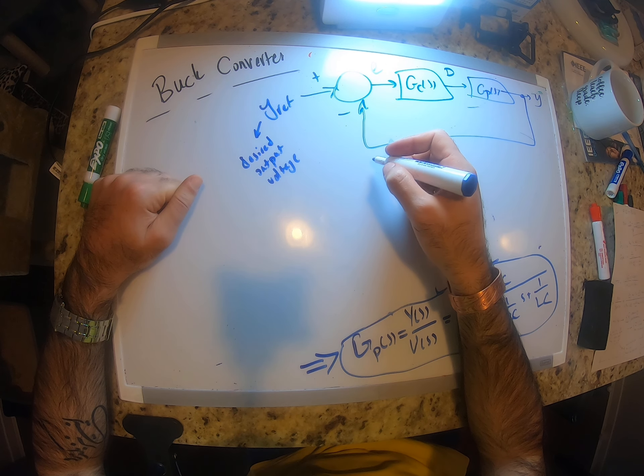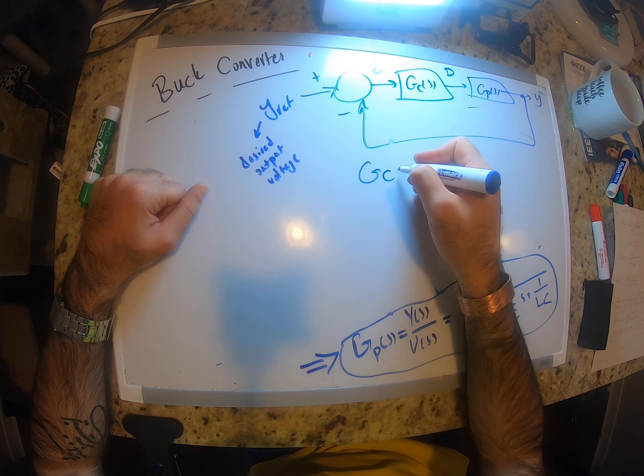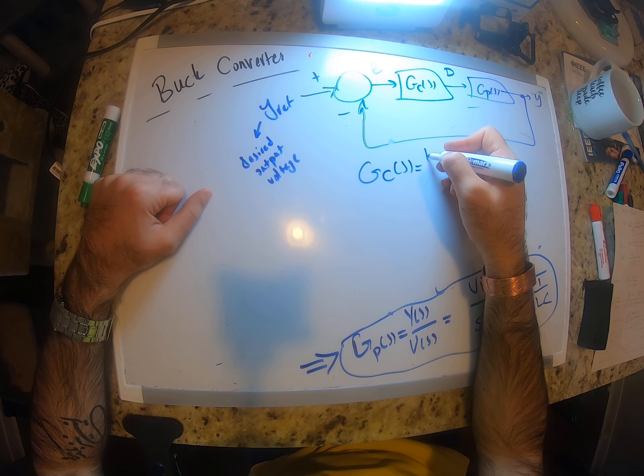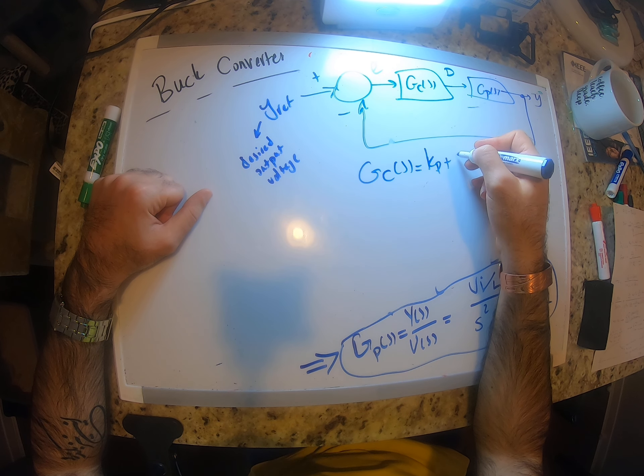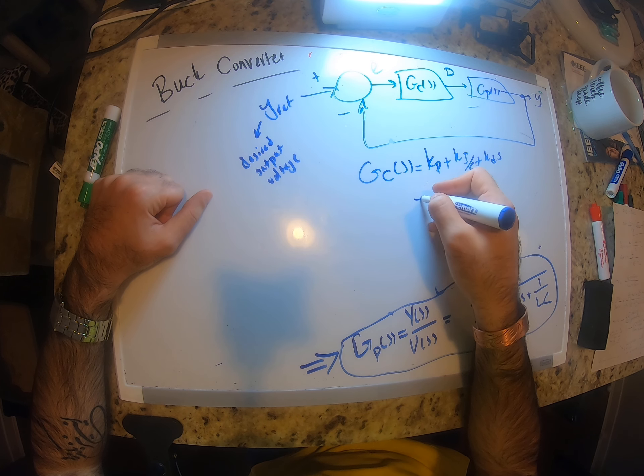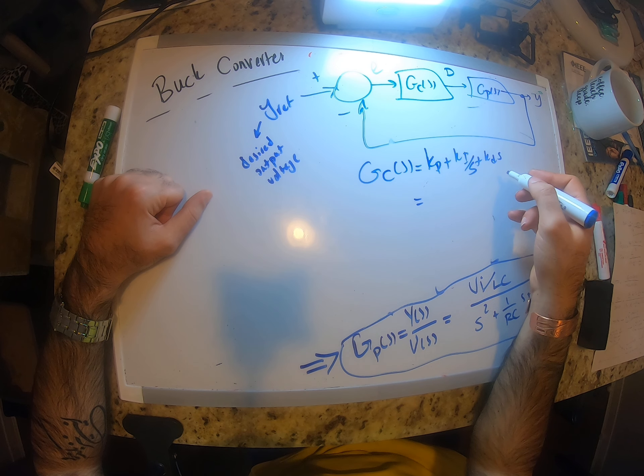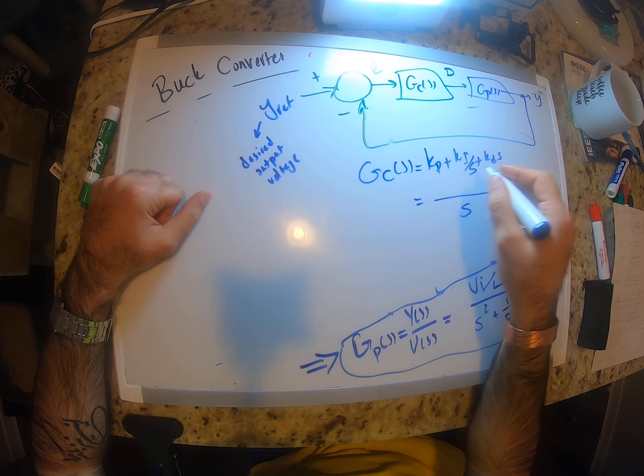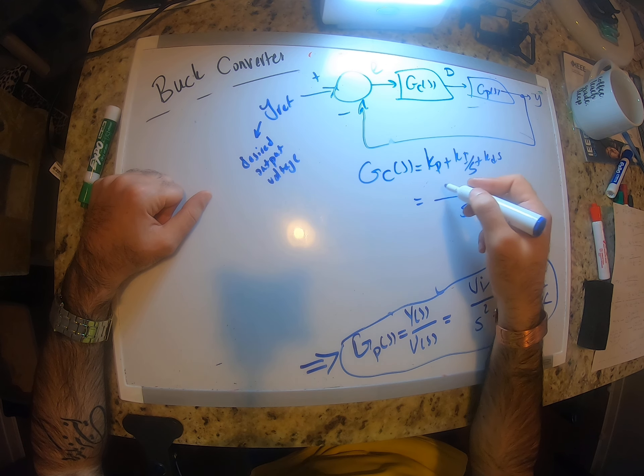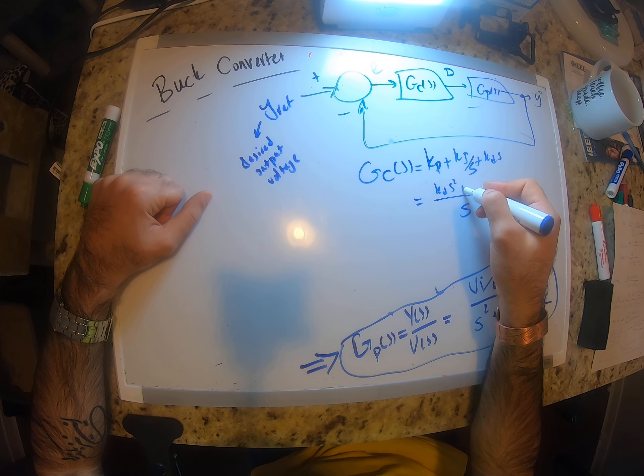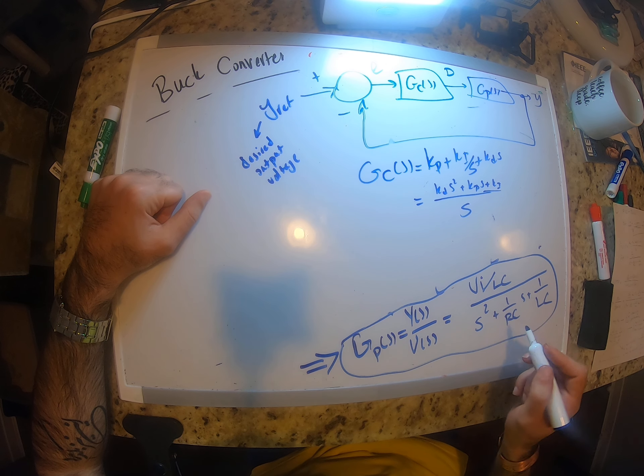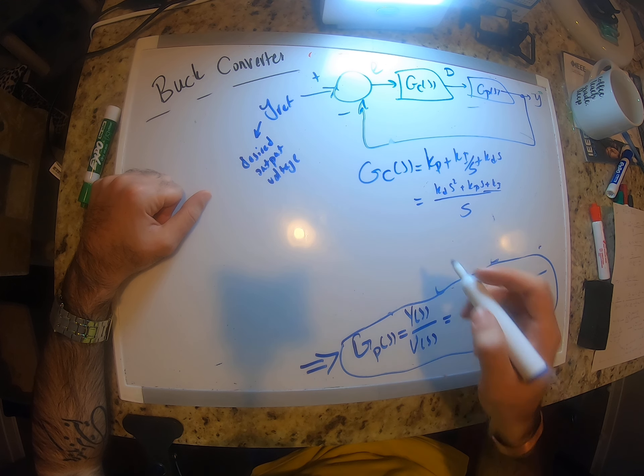So let's say if we have a controller that's a PID controller, you know that it's going to be like this: Kp plus Ki over s plus Kd times s. I'm just going to write this, I'm going to multiply everything by s, both top and denominator, so it's going to be Kd s squared plus Kp s plus Ki, right? And this is our plant transfer function.